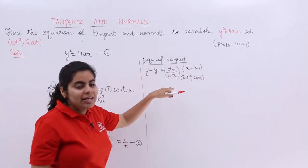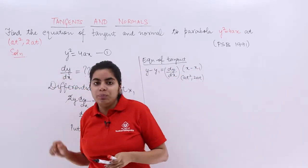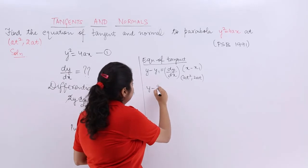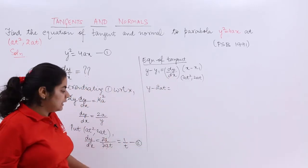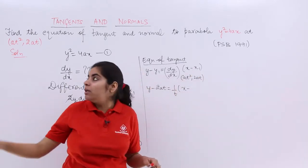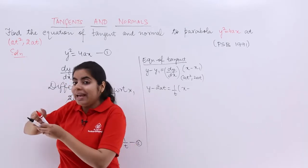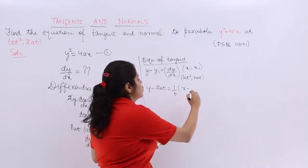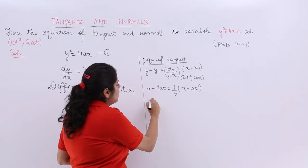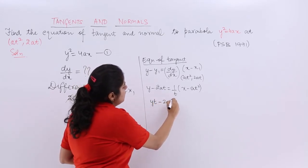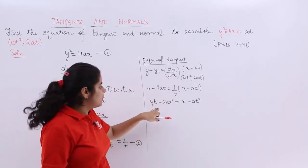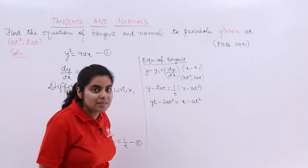Here, y₁ = 2at and x₁ = at². Substituting: y − 2at = (1/t)(x − at²). Cross-multiplying gives yt − 2at² = x − at², which simplifies to yt − 2at² = x − at².